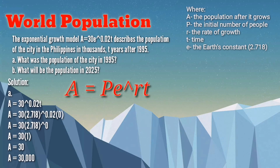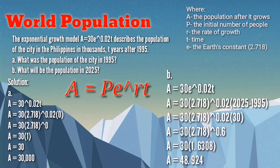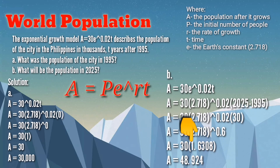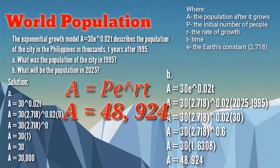For the second question — what will be the population in 2025? — we need to find A, the population after growth in 2025. To find T, we subtract 2025 minus 1995 to get T equals 30. Then 0.02 times 30 equals 0.6. E raised to 0.6 equals approximately 1.6308. Then 30 times 1.6308 equals 48.924, which in thousands gives us 48,924. That would be the population in 2025.